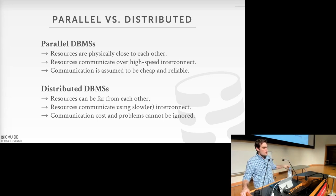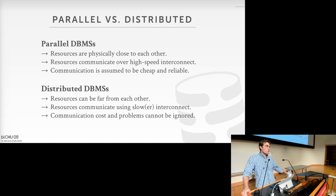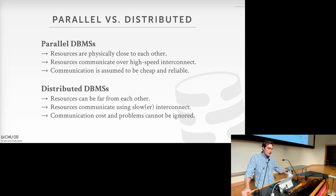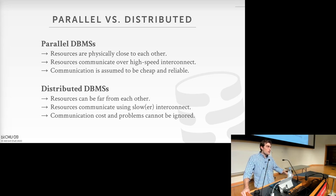Concrete differences: parallel DBMSs typically deal with resources that are physically close to each other — multiple cores, multiple CPUs, multi-socket machines all physically located together. Resources communicate over high-speed interconnects with shared memory, and communication is assumed to be cheap. Relative to making a remote call to another machine in another data center, all inter-core or local communication in a parallel DBMS is extremely cheap.